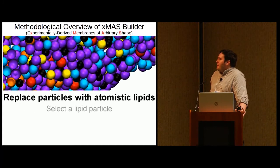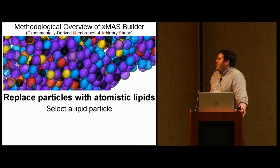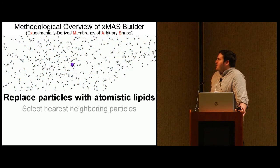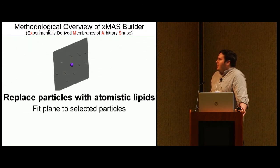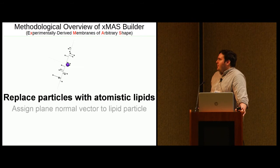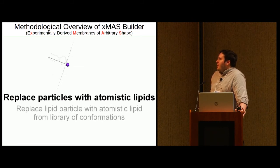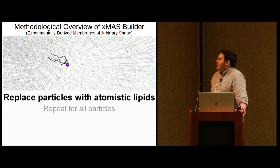You can do this first by selecting a lipid particle, selecting its nearest neighboring particles, fitting a plane to the selected particles, and then assigning the plane normal vector to the originally selected particle. At this point, you can replace the originally selected particle with an atomistic lipid from a library of confirmations, and you can repeat this for all the particles in your system.